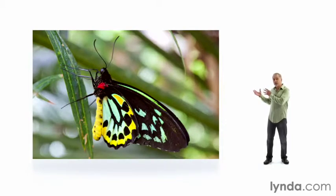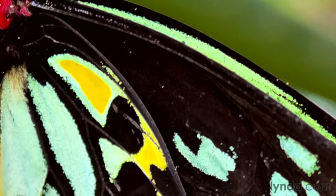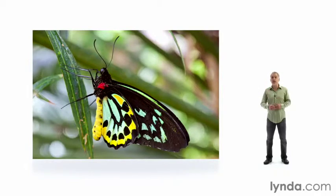For example, in this photo, the edges are the outline of the butterfly's body and the patterns inside the wings. Then Photoshop traces razor-thin halos around the edges. The halos appear bright on the light side of the edge and dark on the dark side. This renders the edges in high contrast, which our eyes read as more sharply defined.